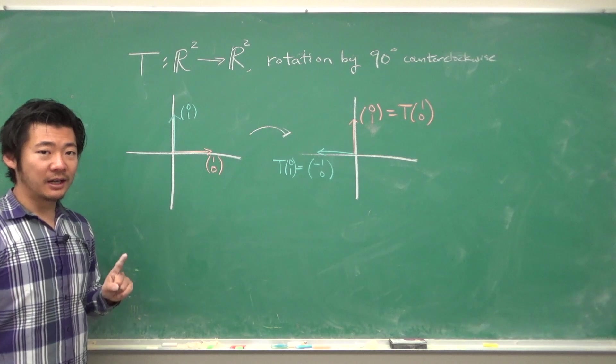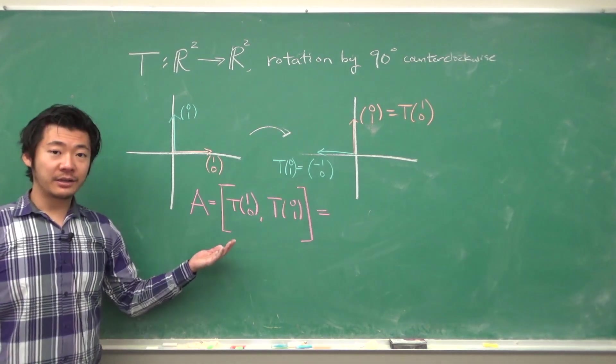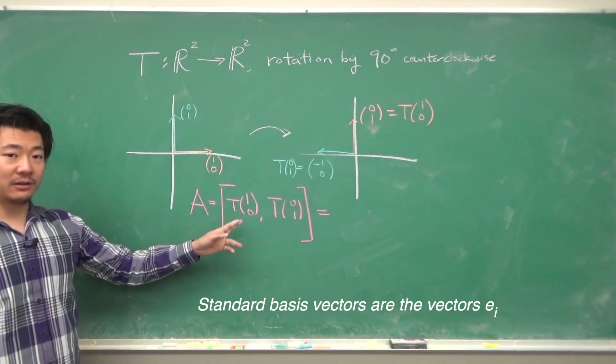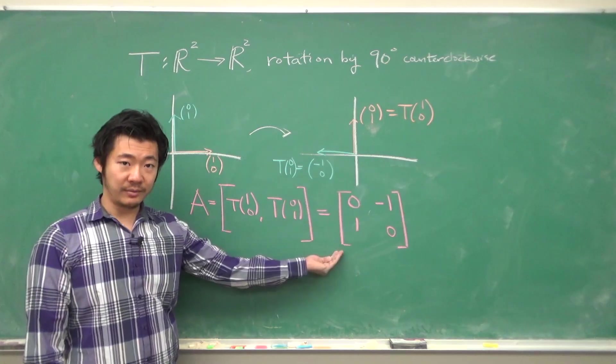So the matrix of the linear transformation has columns which are the outputs of the standard basis vectors (1, 0) and (0, 1). So something like this.